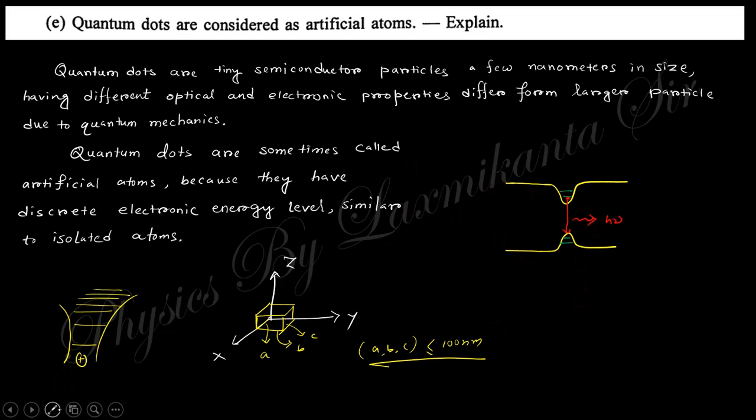You can see this is the conduction band of any semiconductor material, this is the valence band. In this region there is a quantum dot. This is bulk material on both sides, but between these two bulk regions there is a quantum dot. That is why there are energy levels present here and this gap is reduced so that it emits some light, because electron hole recombination is done here. I think it's clear why quantum dots are considered artificial atoms.